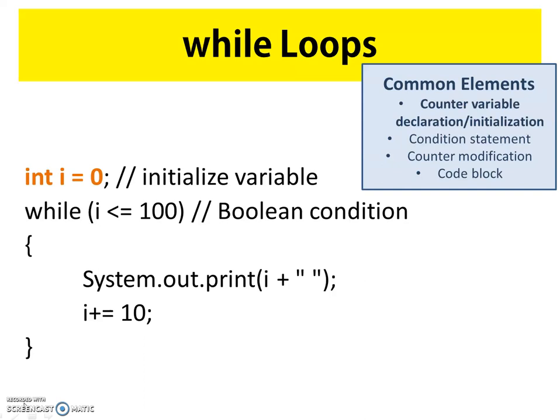The first thing we're going to notice is our very first common element: the counter variable. It's declared and initialized outside of the while loop, above the while loop. So in this example, i is declared as an integer and it's initialized to zero, meaning its start value is zero.